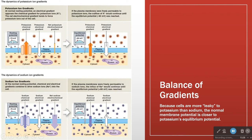So we have our resting membrane potential in this case of minus 70 — that is the balance of potassium's diffusion gradient and its electrical gradient. We have the balance of charges at minus 70.